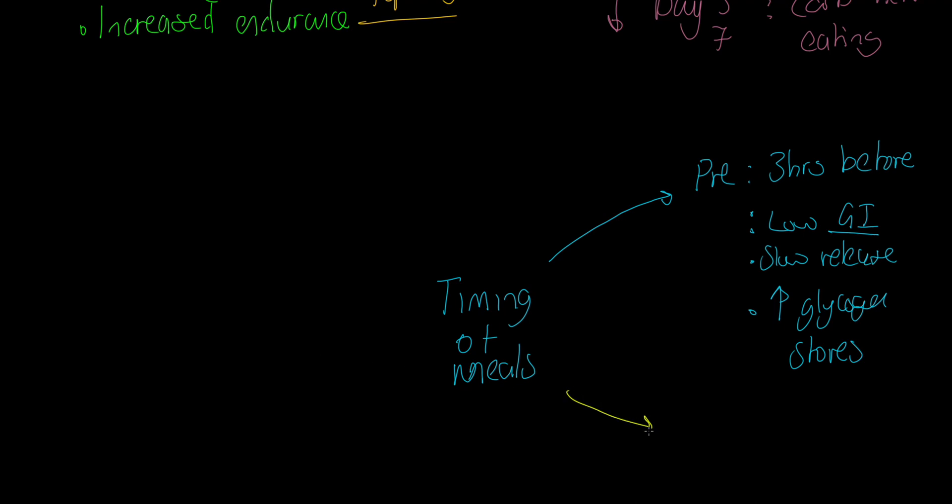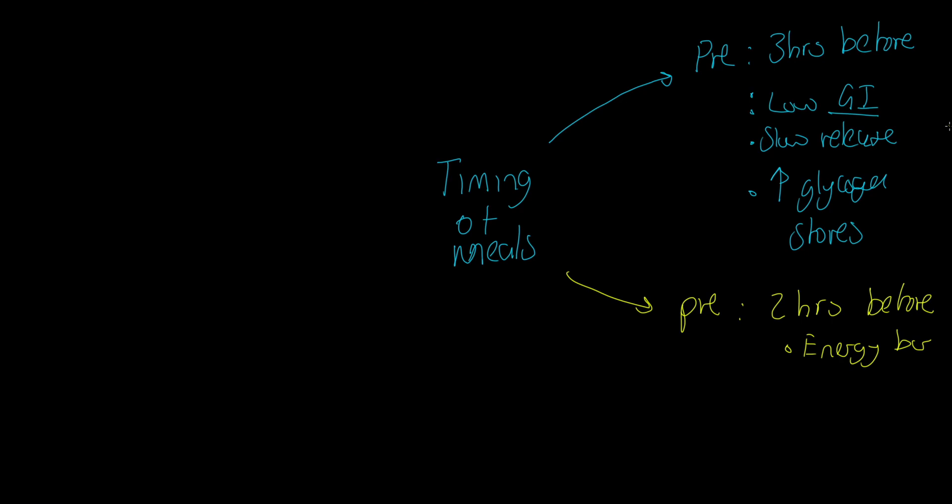That's not the only pre we can consider. We can also consider pre-performance two hours before, an hour later, two hours before our competition, race, match, whatever it happens to be. We might be taking on something like an energy bar, a piece of fruit could even be here. Something which is high GI, fast-acting food, in the form of simple carbs or simple sugars. We wouldn't be taking on starches here. What does this act as? It acts as a top-up to glycogen and it prevents hypoglycemia again.